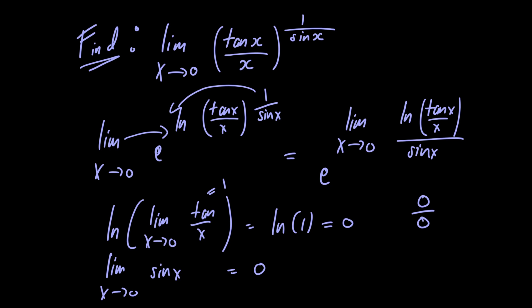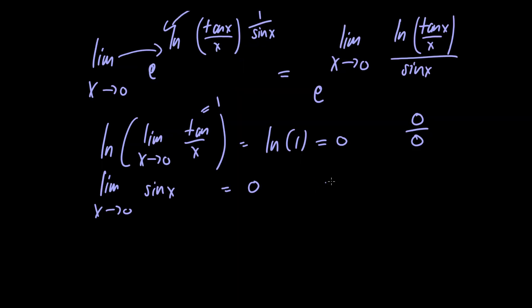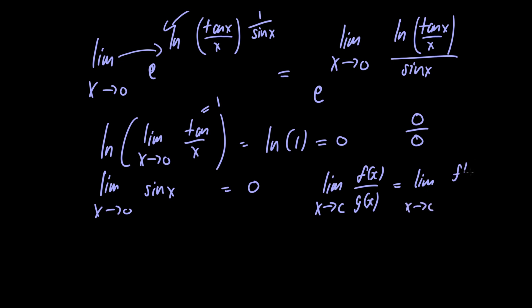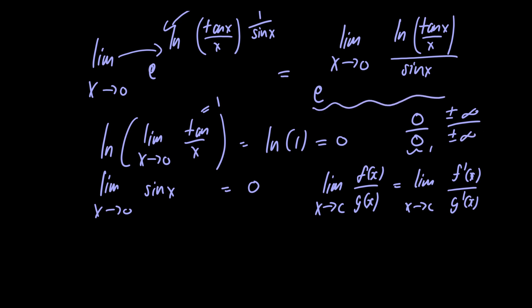In order to evaluate it we're going to have to use L'Hôpital's rule. L'Hôpital's rule says that if you have a limit as x approaches some value c of f of x divided by g of x, then this limit equals the limit as x approaches c of the derivative of f of x divided by the derivative of g of x, given that f and g are both differentiable at c and that the limit is of indeterminate form 0 over 0 or plus or minus infinity over plus or minus infinity. That criteria is satisfied for our problem, so let's go ahead and apply L'Hôpital's rule.